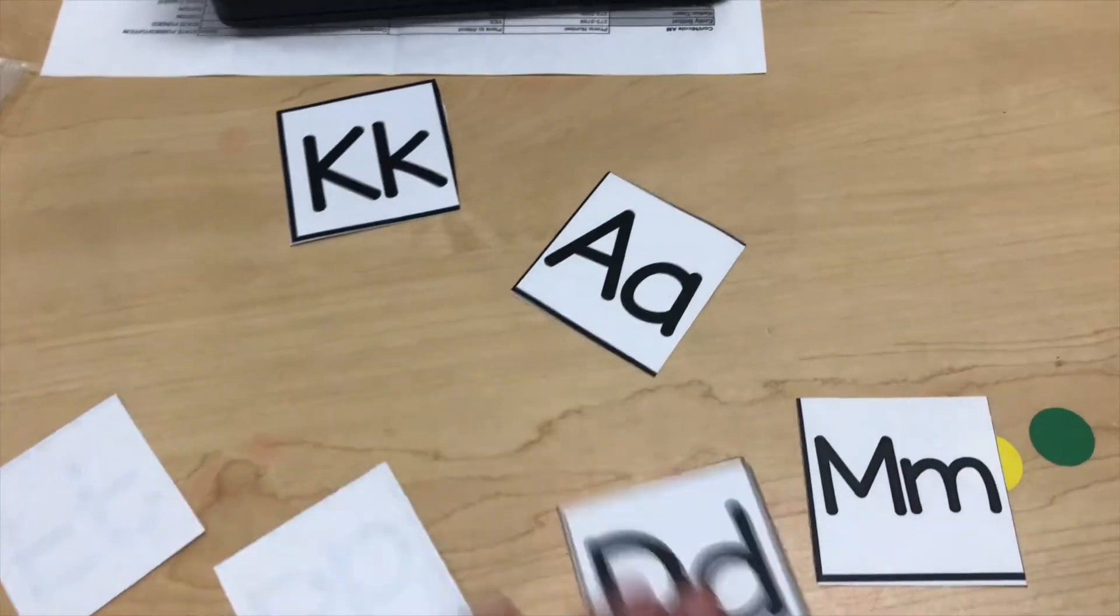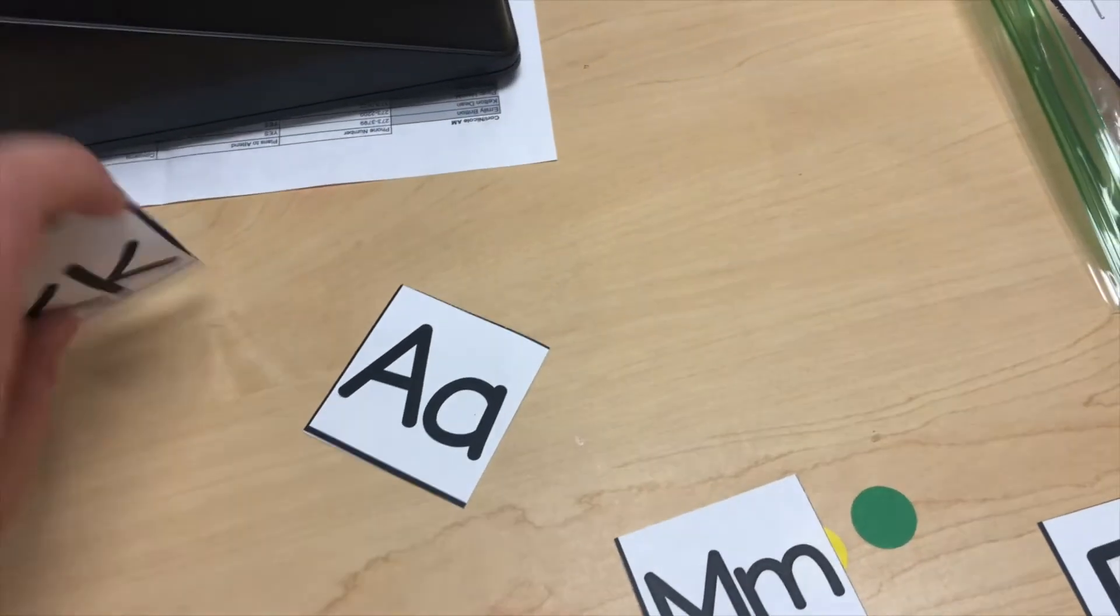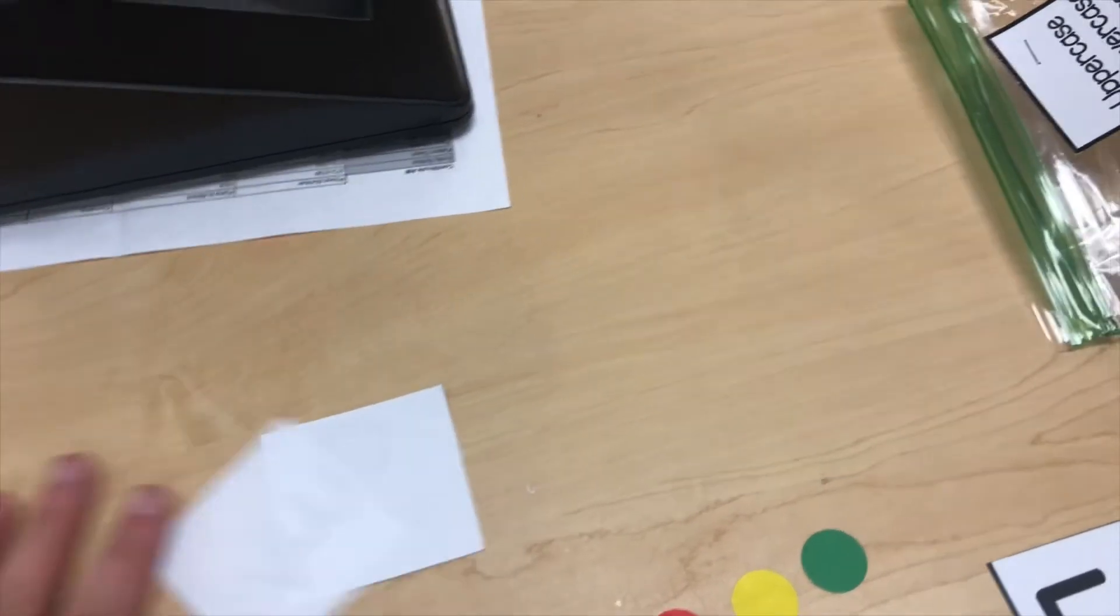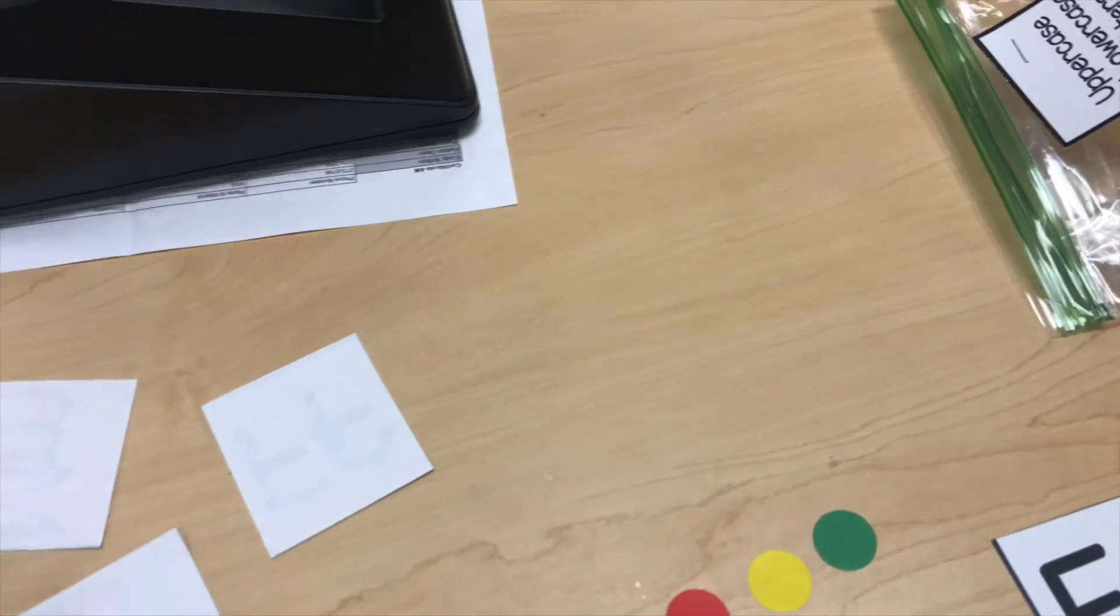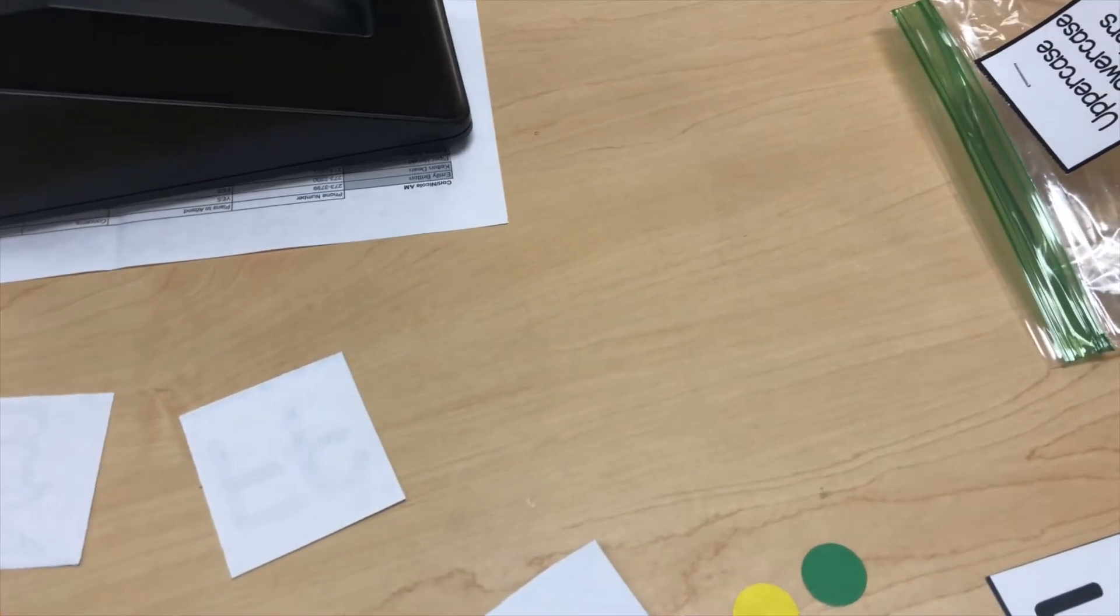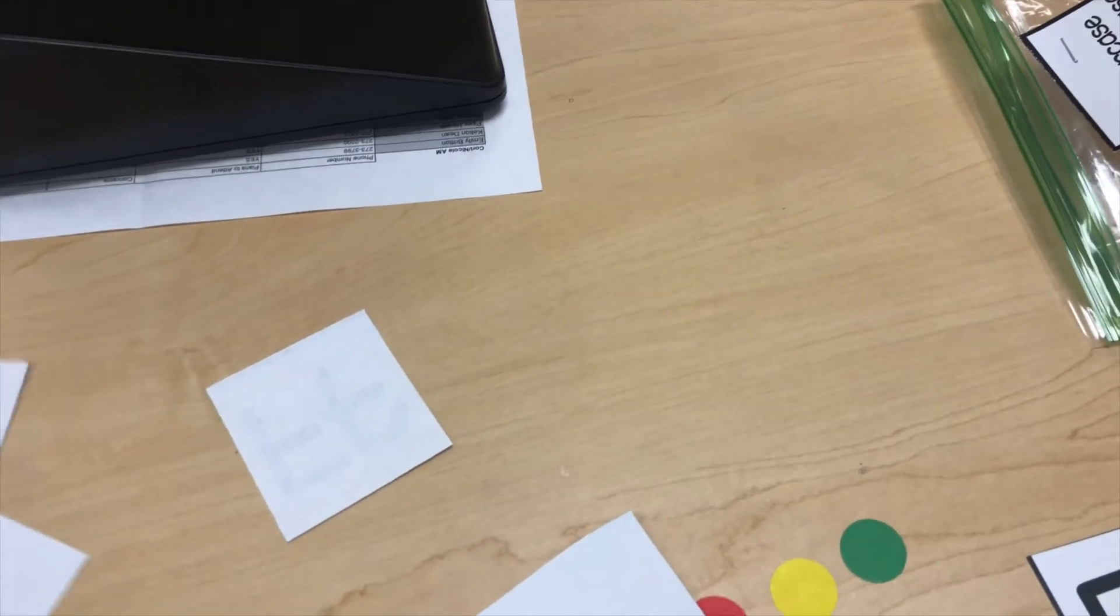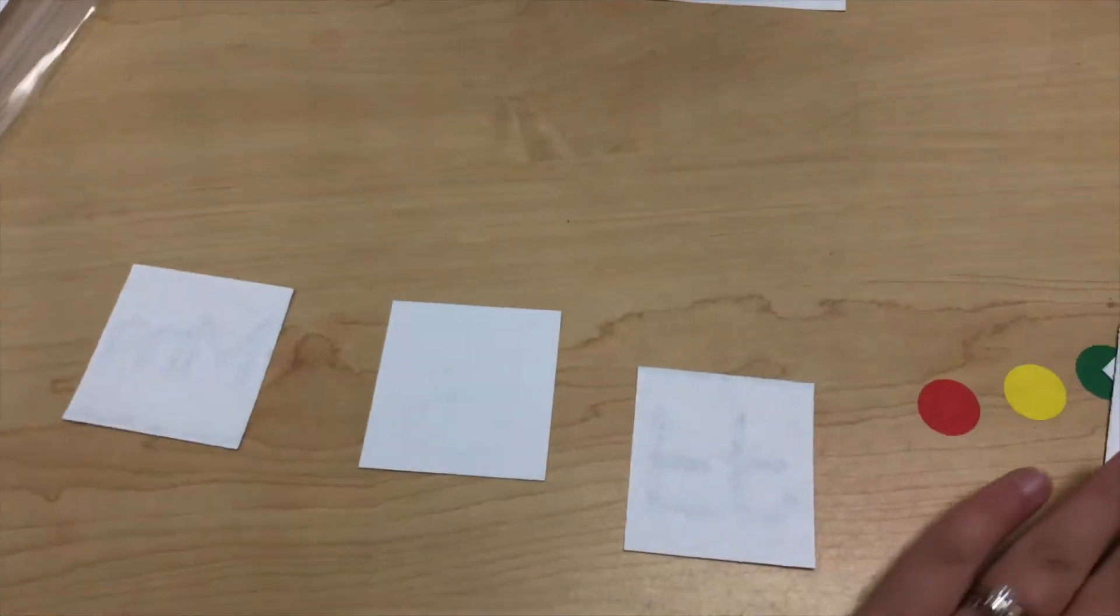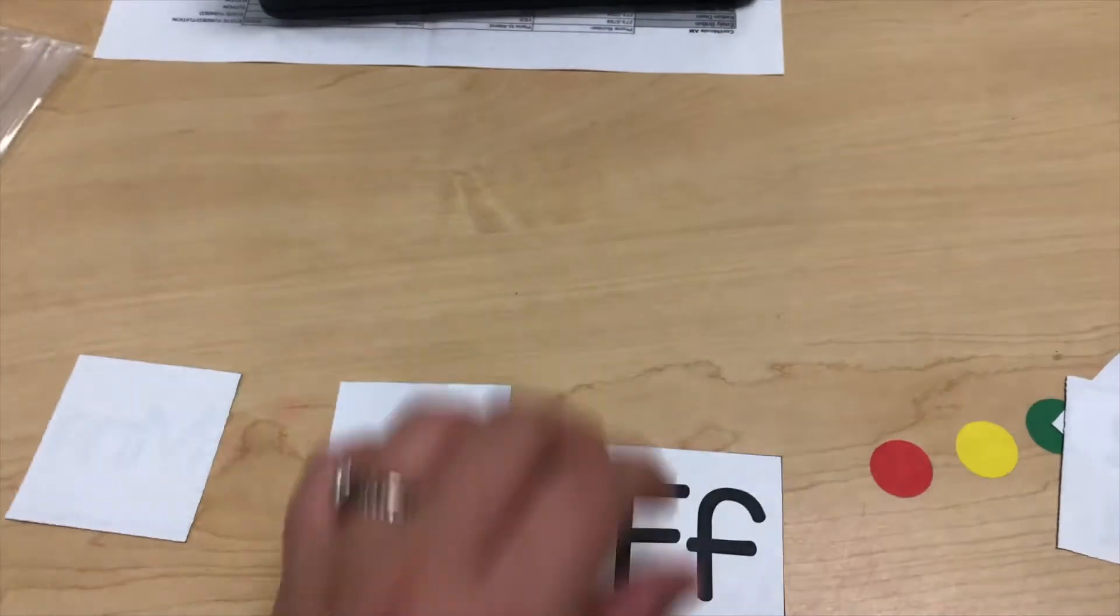Another thing you could do is turn them all over. Now, if you need to do the letter M at one time and then do the letter K, you can. You can do it with the M and two others. If you need to make it easier, you can do three at a time and have your child turn one over.